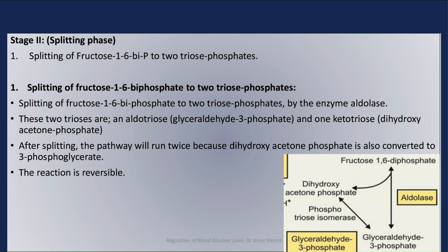Stage 2 of glycolysis is the splitting phase. In this stage, fructose-1,6-bisphosphate is split into two triose phosphates. This stage consists of only one step: the splitting of fructose-1,6-bisphosphate into two triose phosphates by the enzyme aldolase. These two trioses are an aldotriose — glyceraldehyde-3-phosphate — and one ketotriose — dihydroxyacetone phosphate. After splitting, the pathway runs twice because dihydroxyacetone phosphate is also converted to 3-phosphoglycerate. This reaction is reversible.